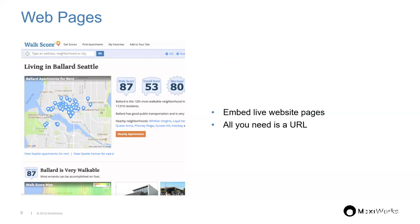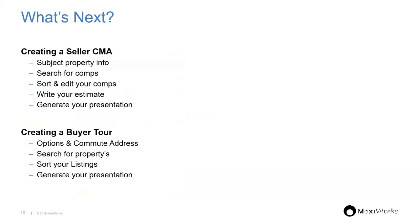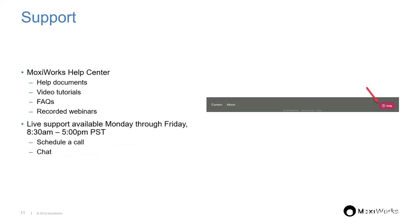Next, we'll look at a live presentation, then go through the basics of creating a seller presentation and a buyer tour — those are the two presentation types I want to show today. Before that, I want to mention our Help Center. In the bottom right-hand corner of any screen in the Moxie Works platform — whether Engage or Present — you'll find a pink Help button.